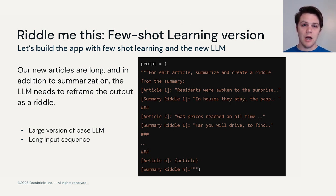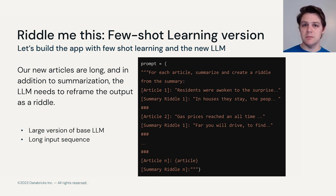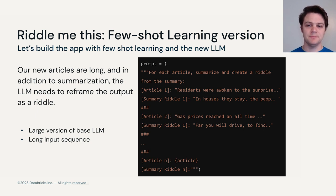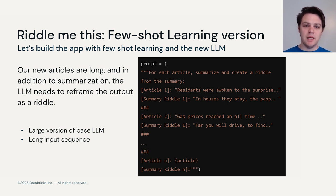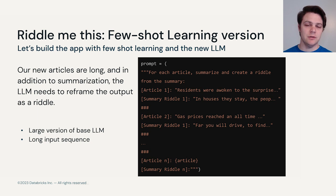So let's build our prompt. We're going to tell the large language model that it needs to summarize and create a riddle from that summary. We'll have all of our articles and the summary riddles as examples that we give in our prompt, and then the final part of our prompt will be the article that we have and then an empty space for the summary riddle so that the LLM knows to begin by producing the summary riddle for that article.